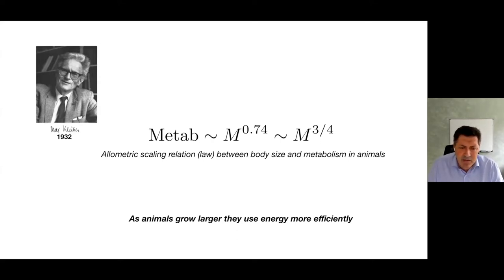Let me comment on a couple of old results. The first one is the allometric scaling relation between body size and metabolism in animals. This was discovered by Max Kleiber one century ago. Essentially, if you get a measure of the size of an animal and compute its metabolism, the relationship is a power law with exponent three quarters.